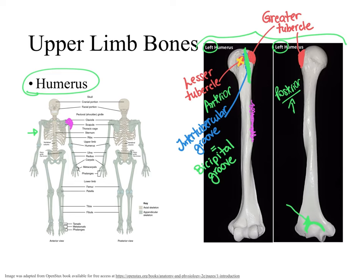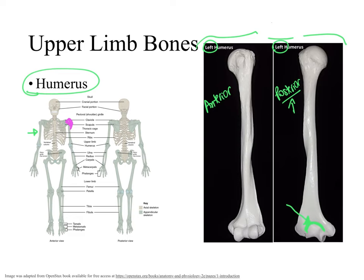Notice how the head of the humerus has a smooth, rounded appearance — that is because it is used in an articulation, forming the glenohumeral joint. The greater and lesser tubercles, by contrast, are rough because they serve as points of attachment for muscles, not for articulation. When we look at the distal aspect of the humerus, this part is very smooth, and those smooth surfaces will serve as areas articulating with another bone.